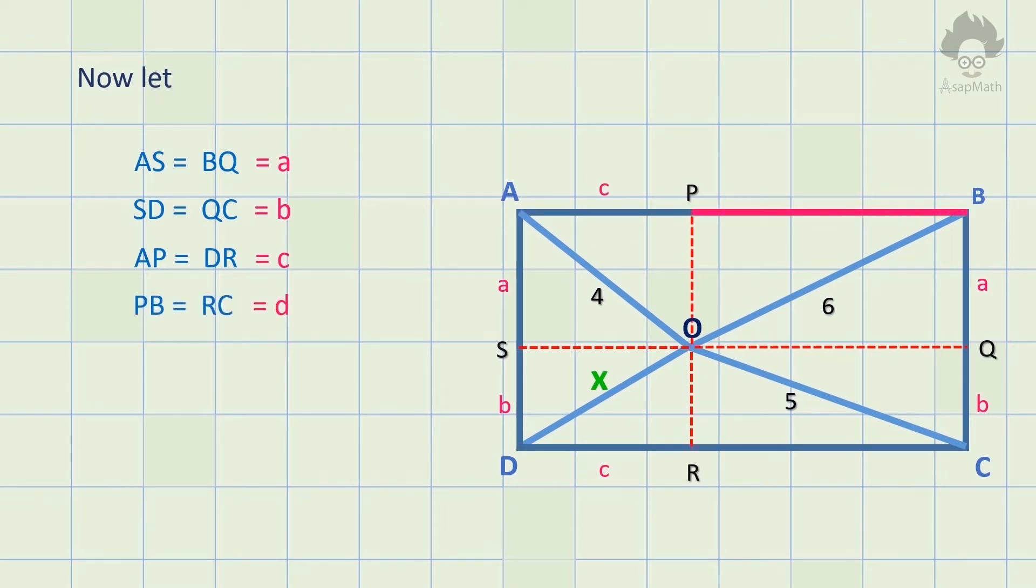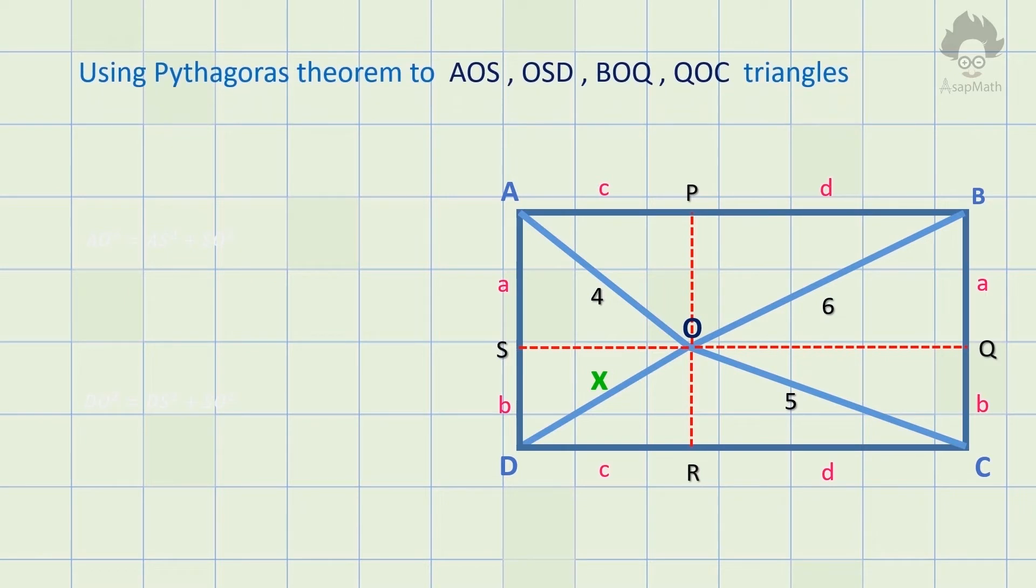Now do you have any idea how to proceed? Use Pythagoras theorem to consider triangles AOS, OSD, BOQ, and QOC. First consider triangle AOS.